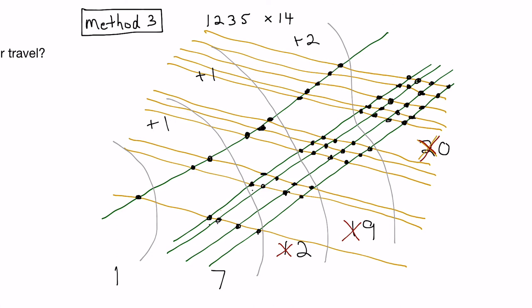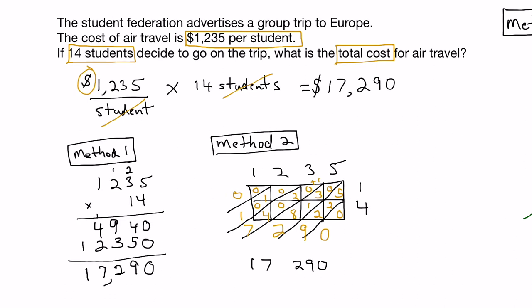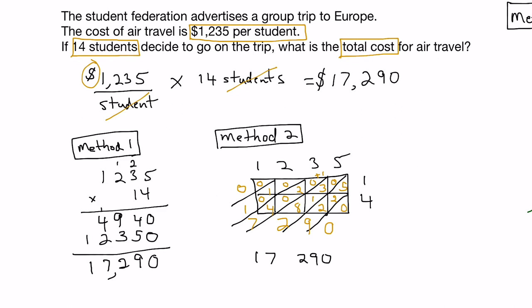So our number is 1, 7, 2, 9, 0. So 1,235 times 14 is equal to 17,290. And that's the same number we got with the other two methods as well. So we're pretty confident that we've got the right answer.